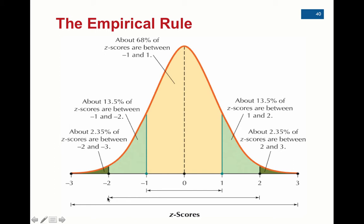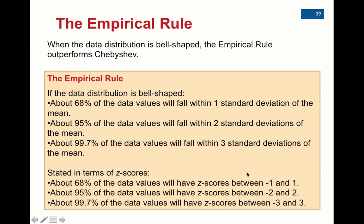However, from negative two standard deviations to positive two standard deviations, 95% of the data is within that range. The last line that I'll give you is that 99.7%, which is basically almost everything, all the data is within three standard deviations of the mean.